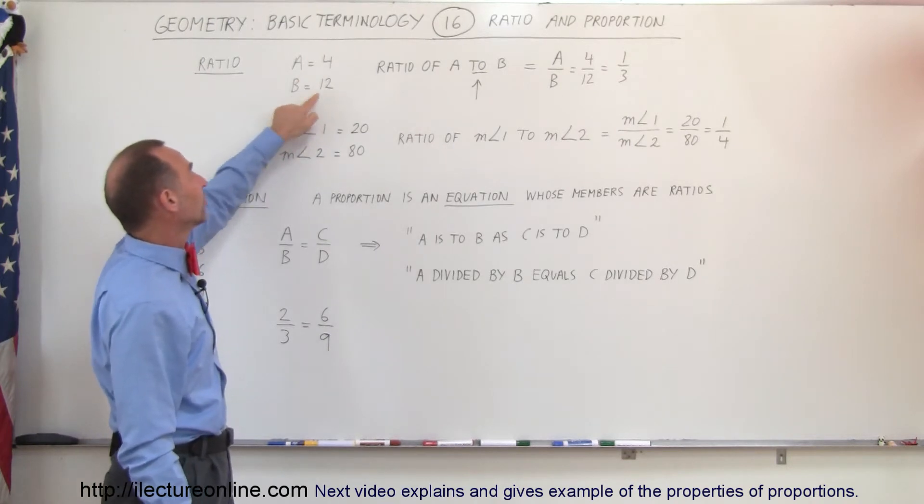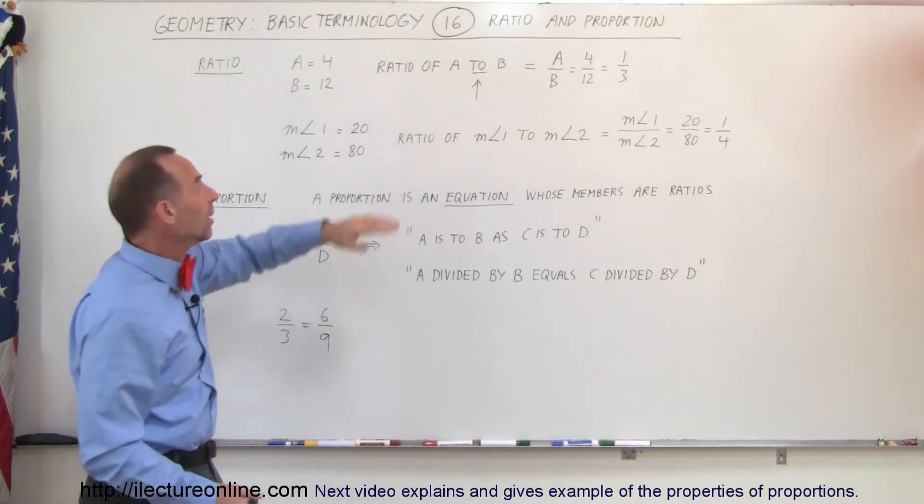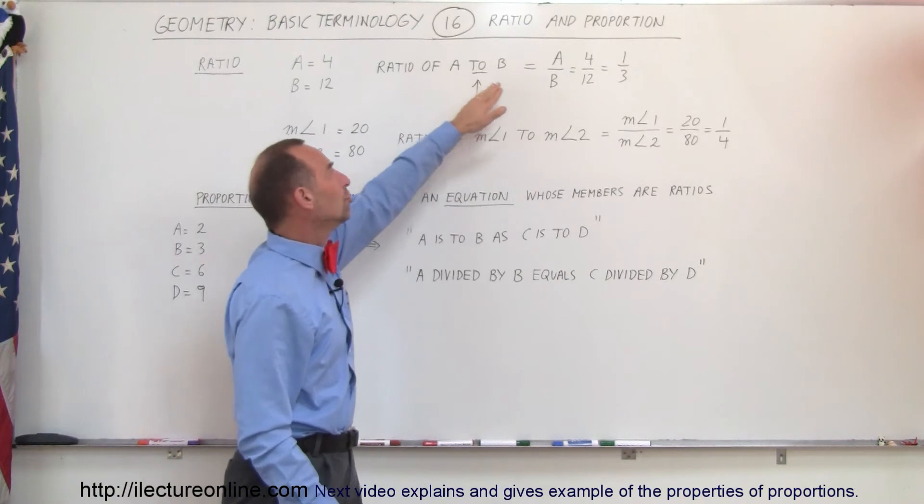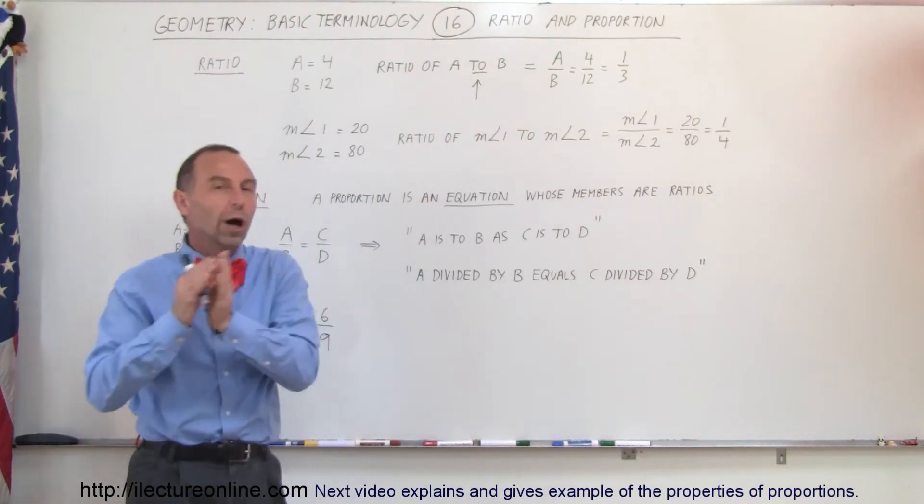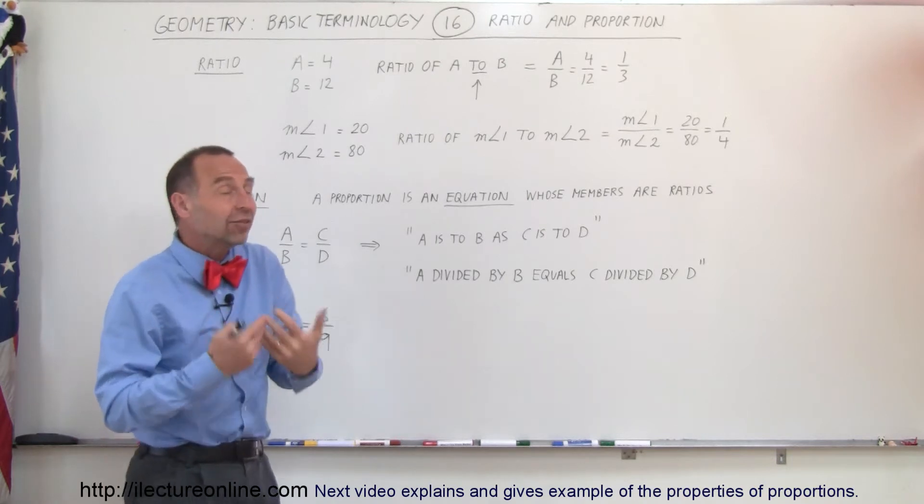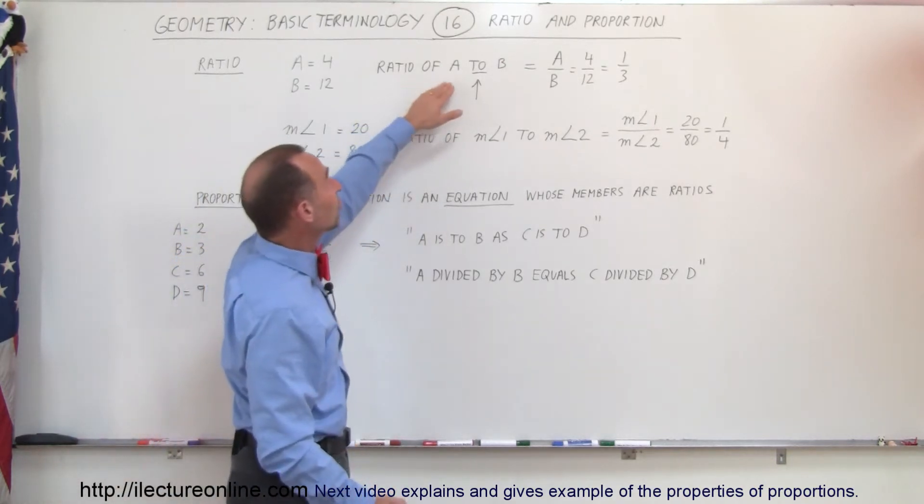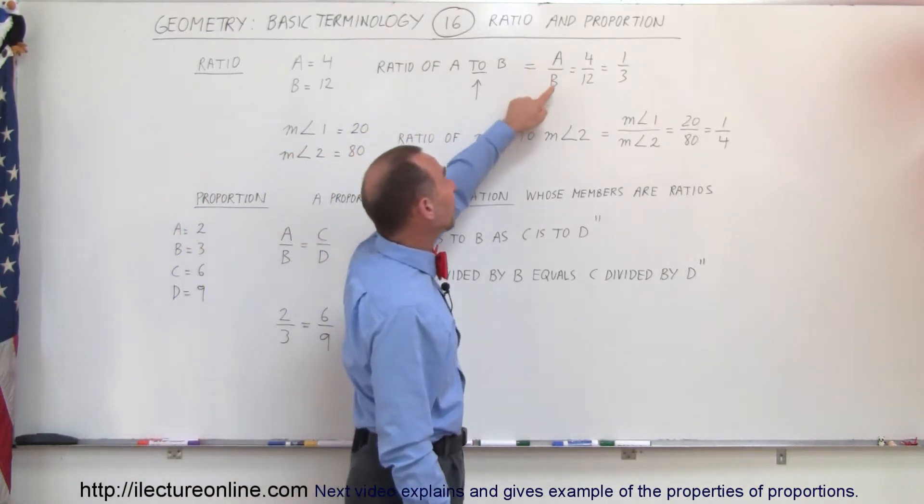Let's say A is equal to 4 and B is equal to 12. Then we say the ratio of A to B, notice the preposition to, so we're comparing one number to another number. And then we write it as a fraction. So the ratio of A to B can be written as A divided by B,